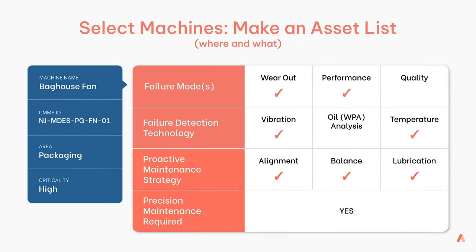The next step, once we've effectively defined what our important pieces of machinery are, is to define their failure modes and the most effective failure detection technology. Different machines are going to fail at different rates depending on what they're doing and their design — it could be hours, days, weeks, or months. Typically you're going to want to sample the machines at four to six times the rate of failure. We're not going to talk about protection systems today. What we are going to talk about is how we employ vibration. You can see from the chart we've looked at this bag house fan and it's got different failure modes — it wears out, it can have a performance failure, and there's always a quality consideration. The technology we're talking about today is vibration.